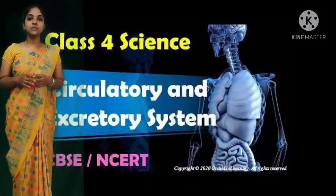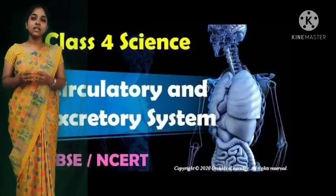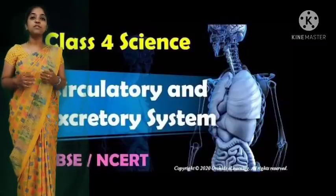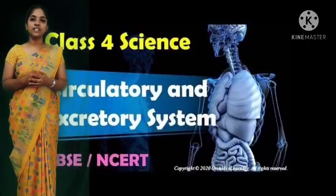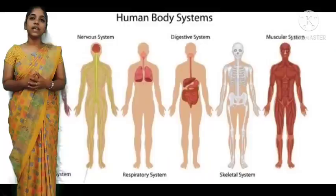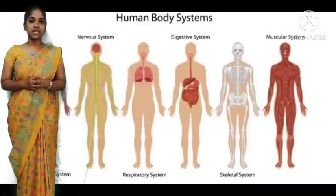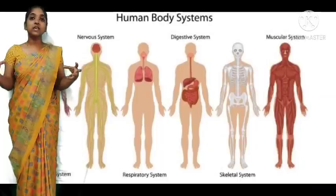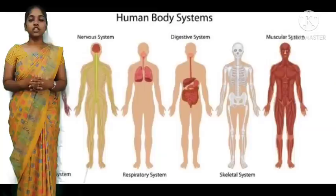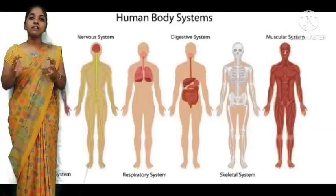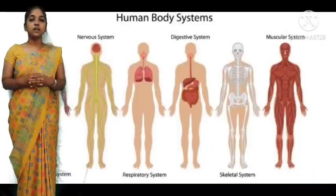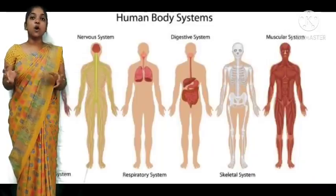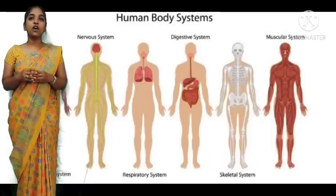Good morning students. In today's class we are going to learn workbook lesson 7, circulatory and excretory system. Before I start the class, let me tell you about the organs. Our body is made of various organs, and many organs work together to do a particular function. All the organs together make up an organ system.